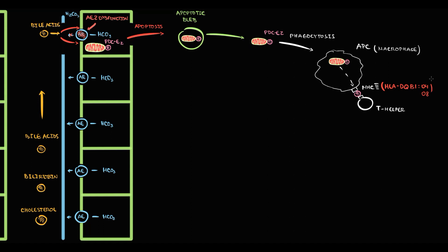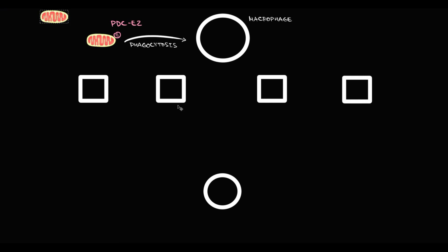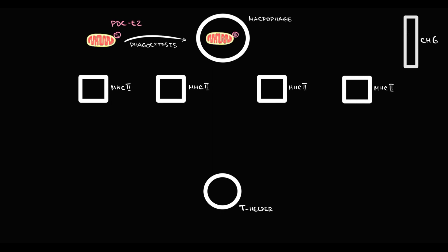To understand why, we need to know how antigen presentation occurs. When mitochondria with pyruvate dehydrogenase complex are released, the macrophage presents small parts of the mitochondria in the form of pyruvate dehydrogenase complex to T-helpers via MHC2 receptors. The genetic information that tells us how to make MHC2 receptors is contained in a gene located on chromosome 6, called the HLA-DQB1 gene. Different variations of this gene are called alleles.